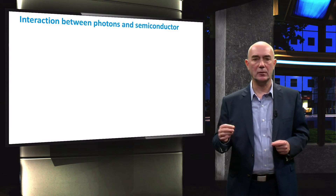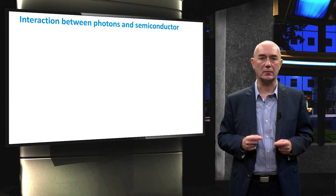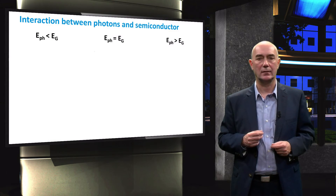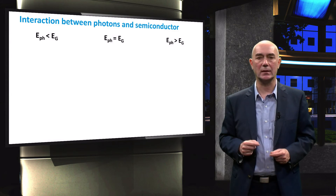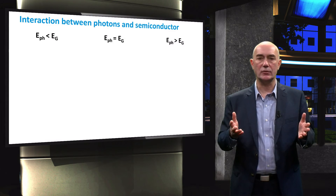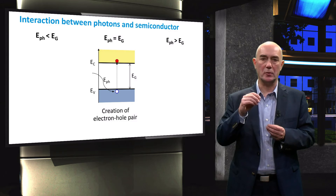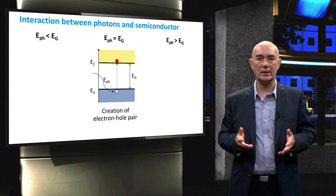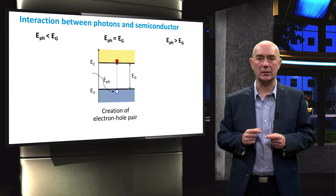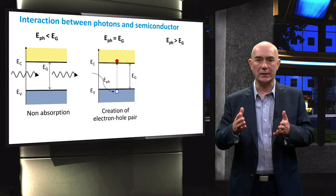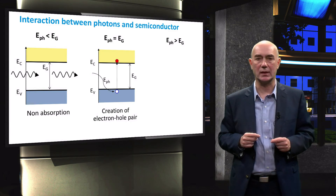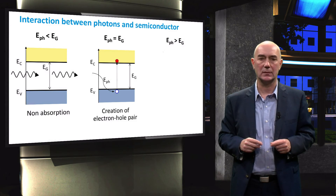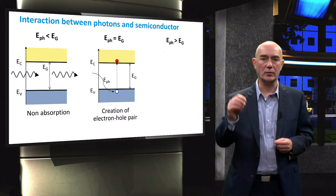As you may recall, depending on the bandgap energy of the absorber layer and the energy of the incident photon, three situations can occur: the energy of the incident photon is less than, equal to, or larger than the bandgap energy. A photon with energy exactly equal to the bandgap energy can be absorbed and will generate an electron-hole pair, with the electron and hole occupying energy states at the edges of the conduction and valence bands respectively. Photons with energy smaller than the bandgap cannot excite valence electrons to states in the conduction band and will simply pass through the semiconductor — this is the case referred to as non-absorption losses.